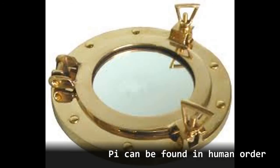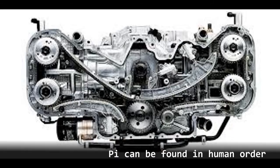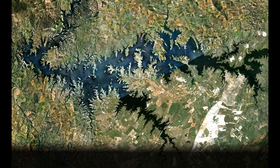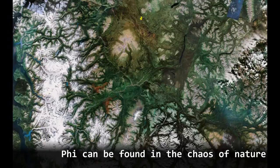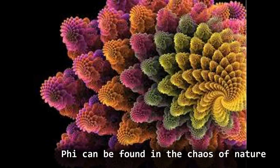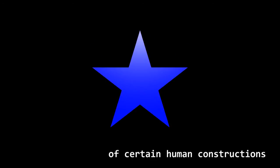Phi can be found in human order, in the chaos of nature, and also in the order of certain human constructions.